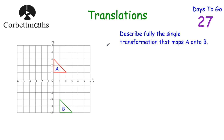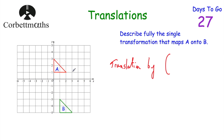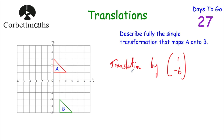Now let's look at describing a translation. Here we've got shape A and shape B on a grid and we've been asked to describe fully the single transformation that maps A onto B. Think about how you'd translate triangle A to get it onto B — first in words, then write the vector. To get from A to B, we move one square to the right and six squares down. So it's a translation by the vector (1, -6): one square to the right and six squares down. For more practice on translations, there's a link in the description below.